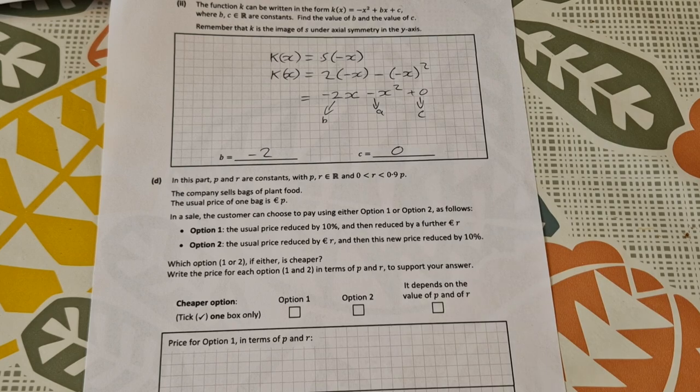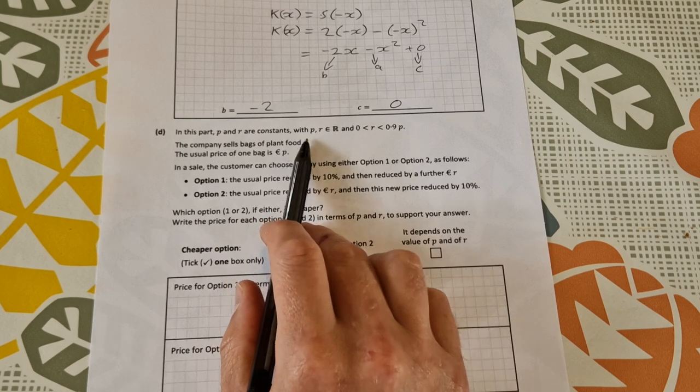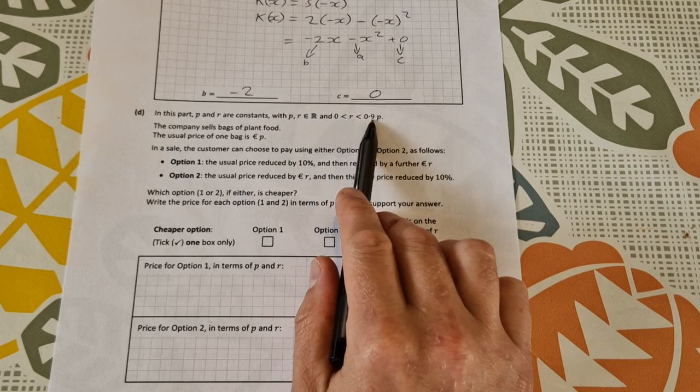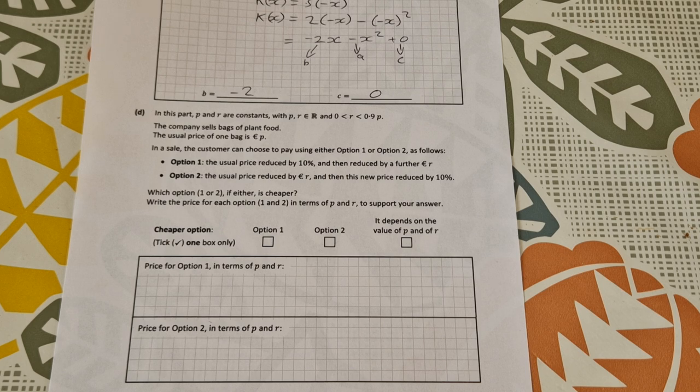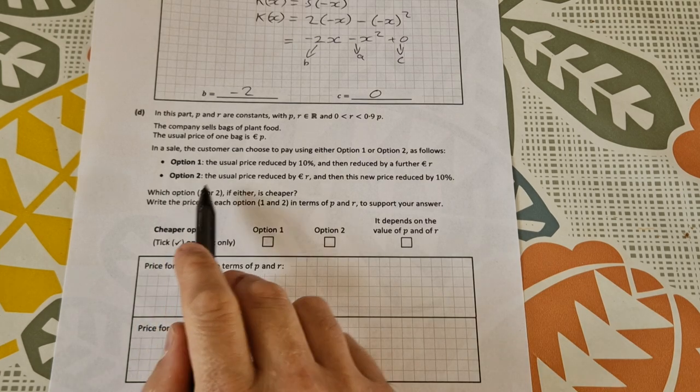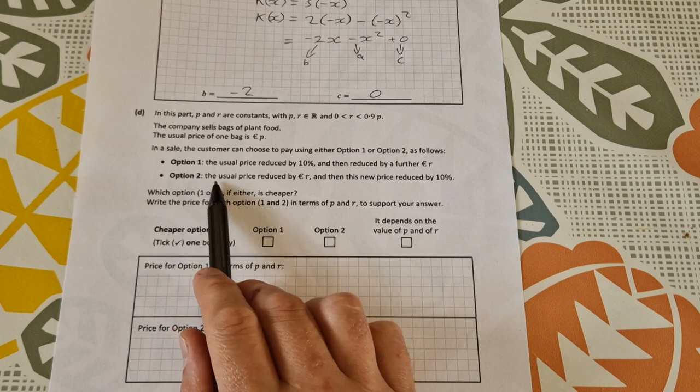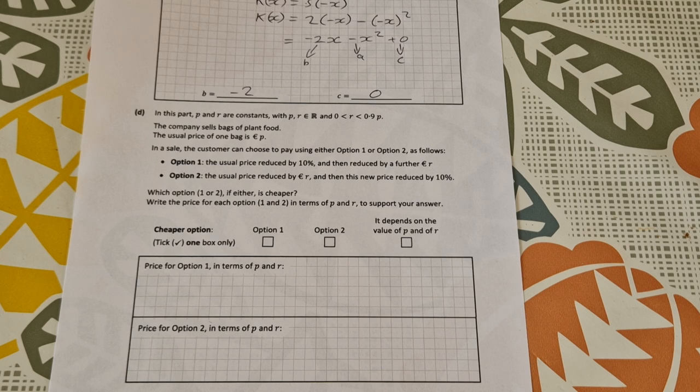And then the final part. In this part, p and r are constants with p and r an element of the real numbers, and r is between 0 and 0.9p. The company sells bags of plant food. The usual price of one bag is p euro. In a sale the customer can choose to pay using either option one or option two as follows: Option 1 is the usual price reduced by 10%, and then reduced by a further r euro. Option 2 is the usual price reduced by r euro, and then this new price reduced by 10%. Which option, 1 or 2, is cheaper? Write the price for each option in terms of p and r to support your answer.